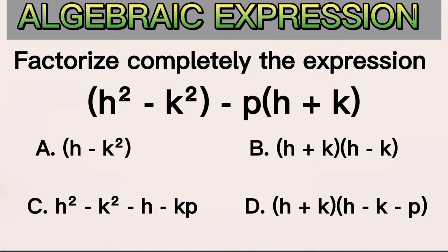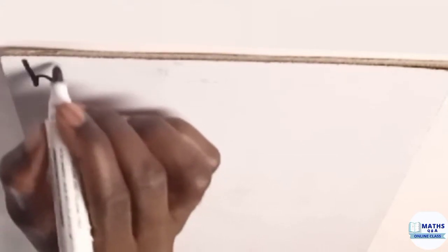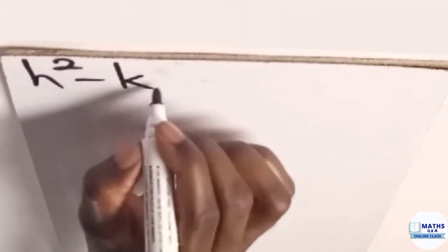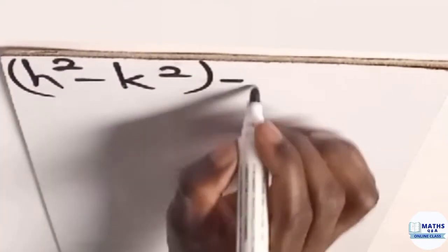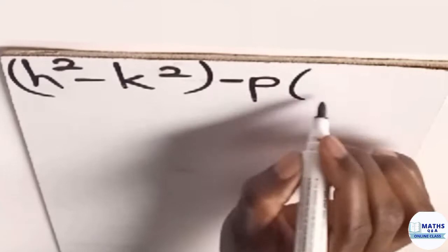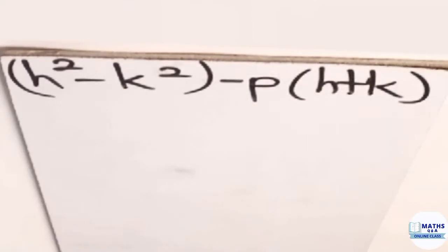Let's solve after which we decide which one is correct. So we are having our question here h square minus k square all in a bracket and then we have minus p into bracket h plus k. That's in a bracket, right?